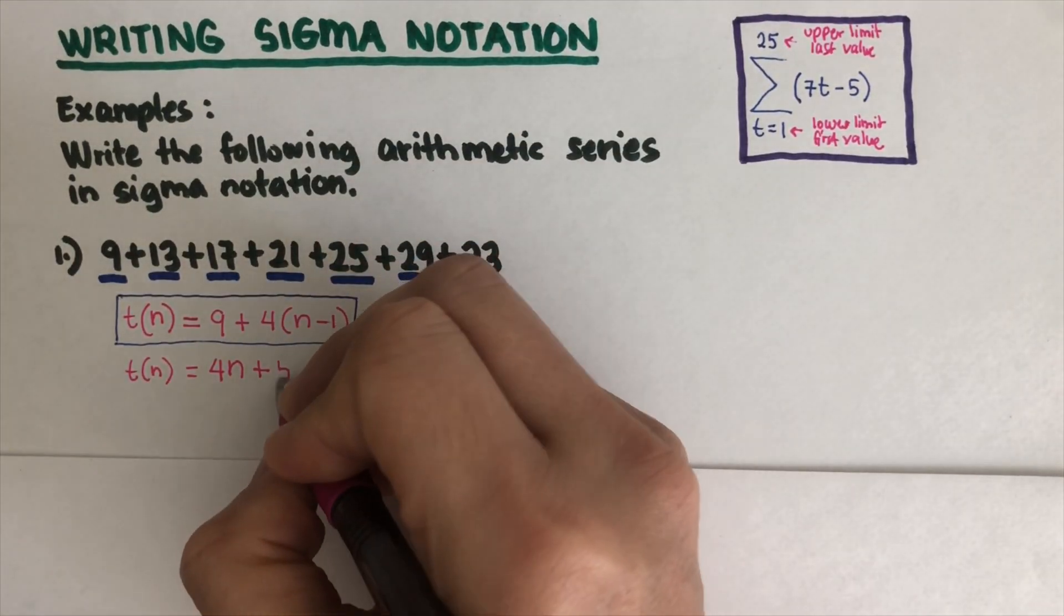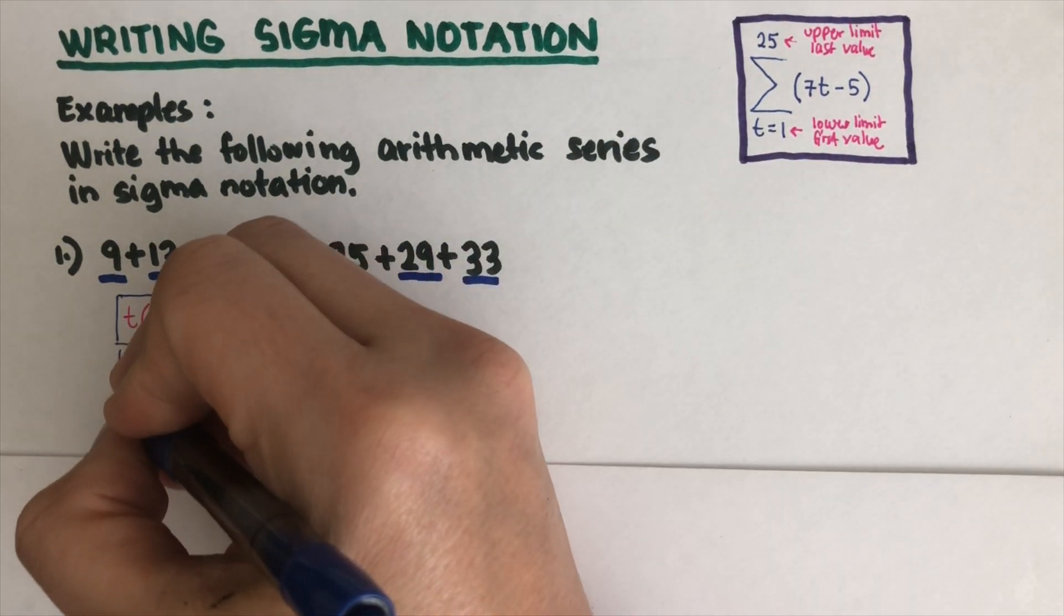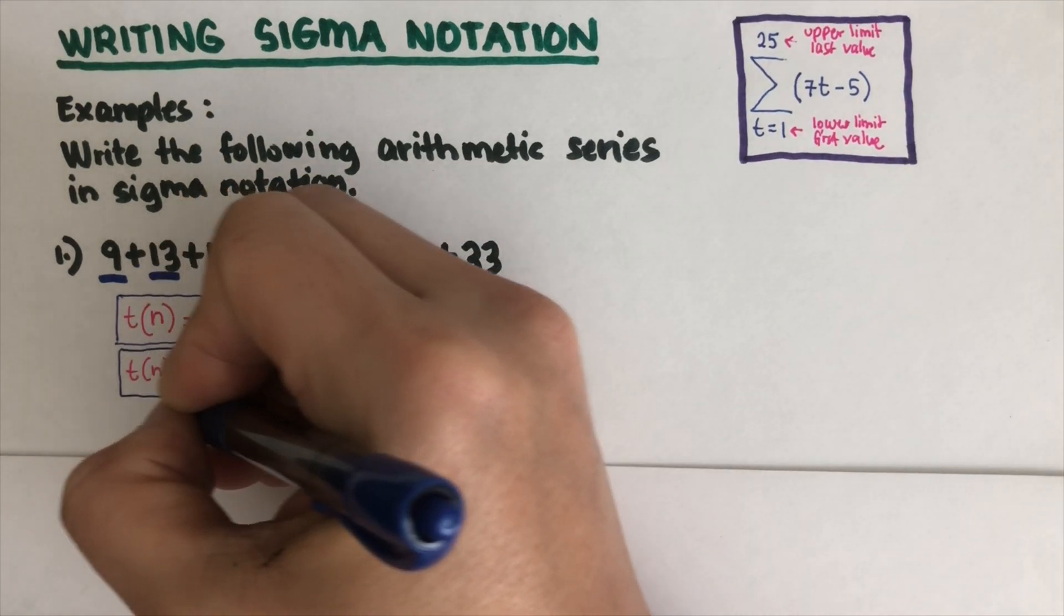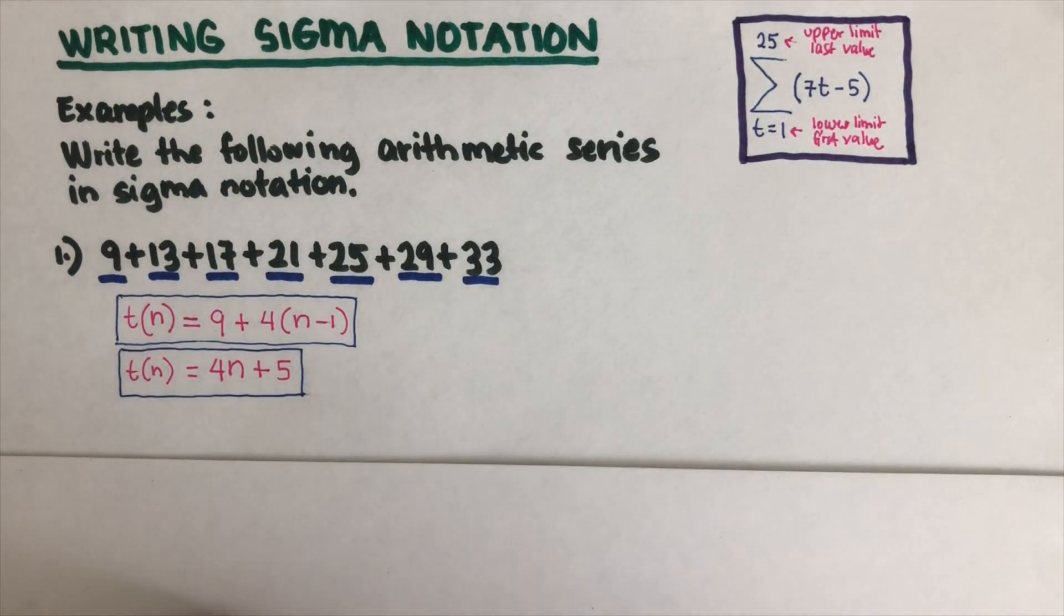That means we go backwards. If this is plus four, so we go minus four, so that should be a 5. These two are equivalent equations. Again there is a video on how we can get to these equations, I will put the link in the description box below.